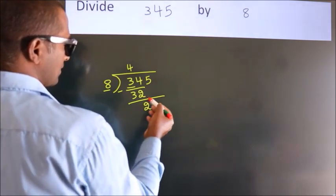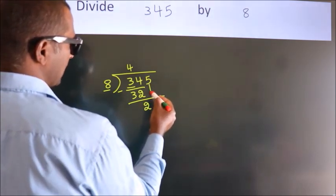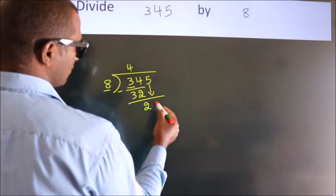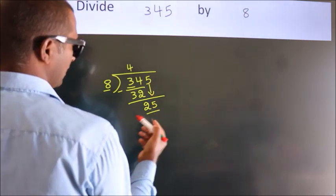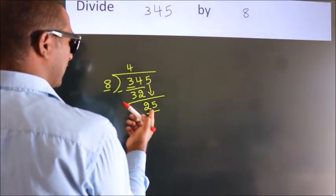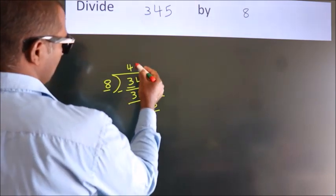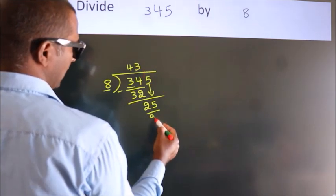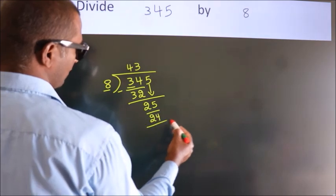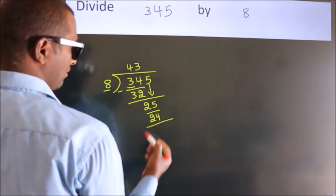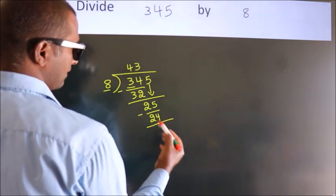After this, bring down the beside number. So, 5 down. So, 25. A number close to 25 in the 8 table is 8 threes, 24. Now we subtract. We get 1.